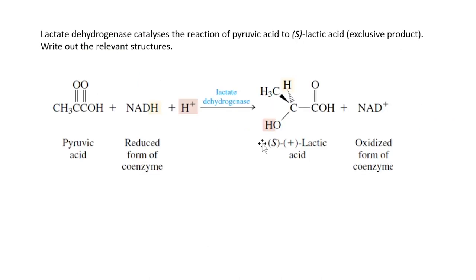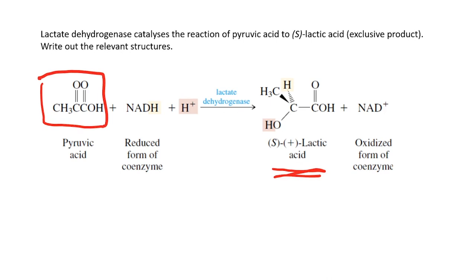The next question is about pyruvic acid forming lactic acid. Lactate dehydrogenase takes pyruvic acid and converts it to lactic acid using the coenzyme NADH — nicotinamide adenine dinucleotide — which is a source of hydride. At the end of the reaction, NAD⁺ is formed, which is the oxidized form of the coenzyme. Here is the structure of lactic acid for reference.